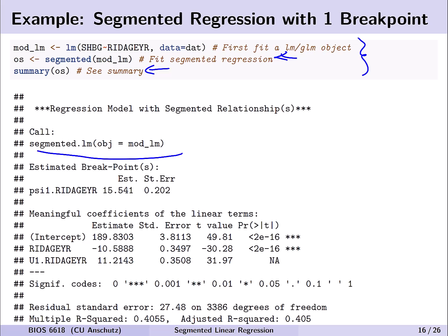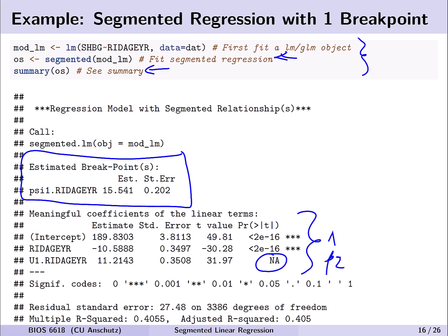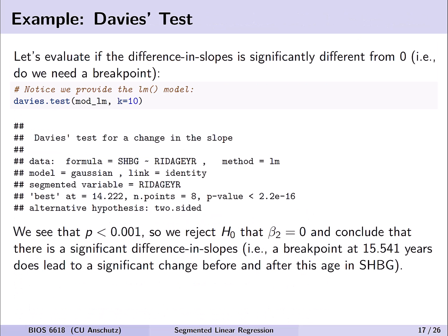The first key output is the location of the estimated breakpoint. Here we're estimating one breakpoint, and we see it's estimated to occur at 15.5 years, with a standard error estimate as well. The other terms correspond to the model coefficients. The intercept and age term for the first segment have p-values, but beta 2 — the difference in slopes before and after the breakpoint — shows NA, because traditional statistical tests are not appropriate here. We need to use Davies' test.